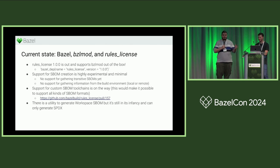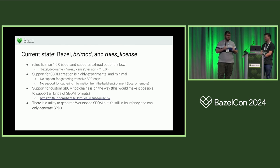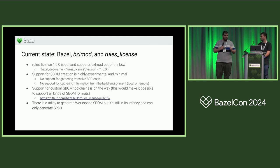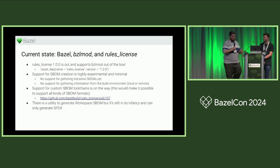There is no support yet for gathering transitive SBOMs — if you're using pre-built dependencies, you need to gather SBOMs that come from outside. And the workspace SBOM support is still very much in its infancy. It was built during a hackathon last year and has stayed that way. It allows you to look at the external packages and list all the dependencies it finds — it kind of works, but it's very much in its infancy.